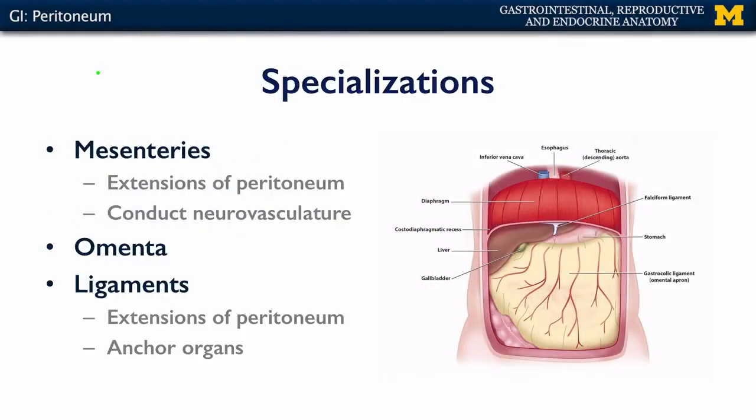There are elaborations of the peritoneum that we can observe within the abdominal pelvic cavity. Mesenteries are extensions of the parietal peritoneum reaching out to contact the visceral peritoneum, and they represent opportunities for neurovasculature to be conducted from the body wall to the viscera. These mesenteries may take the form of omenta, which are double and sometimes quadruple sheets of mesentery, or peritoneal ligaments, which help to anchor organs — sometimes to other organs and sometimes to the body wall.